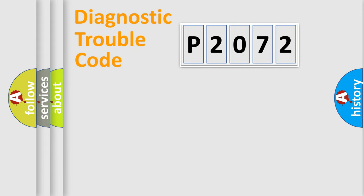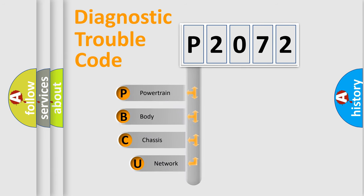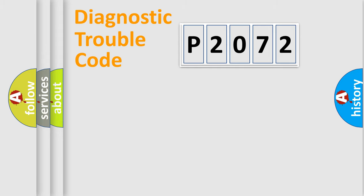Let's do this. First, let's look at the history of diagnostic fault code composition according to the OBD2 protocol, which is unified for all automakers since 2000. We divide the electric system of an automobile into four basic units: Powertrain, Body, Chassis, and Network.